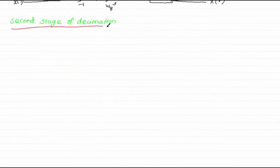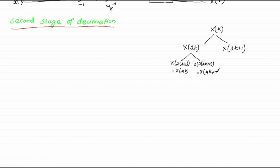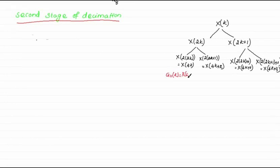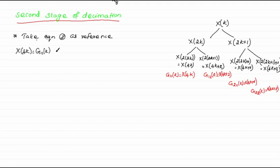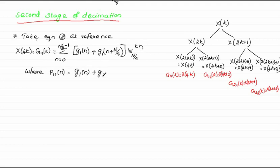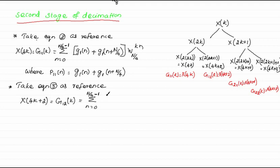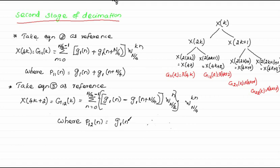Now let us see the second stage of decimation. In the first stage, we split X of K into odd and even numbered samples. In the second stage, we split the even numbered samples further into odd and even numbered samples. The subdivided samples are represented by capital G. Taking equation 2 as reference, X of 4K can be represented in terms of G1 of N. We assume P11 of N equal to G1 of N plus G1 of N plus N by 4. Taking equation 3 as reference, X of 4K plus 2 can be represented by this equation, where P12 of N equals G1 of N minus G1 of N plus N by 4, multiplied with W of N by 2 power N.